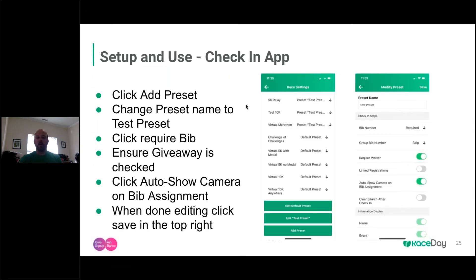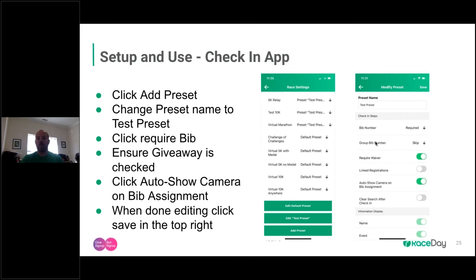For Presets: go into the top three lines and select Settings. You can add a preset here. For this event with multiple sub-events, I've already added a preset called 'Test Preset' and selected it in the drop-down. For this example — a timed 5K — we're going to require the bib. If someone checks in without a bib number, we want it to error out. We're not doing group or team for this one, and we're requiring a waiver.